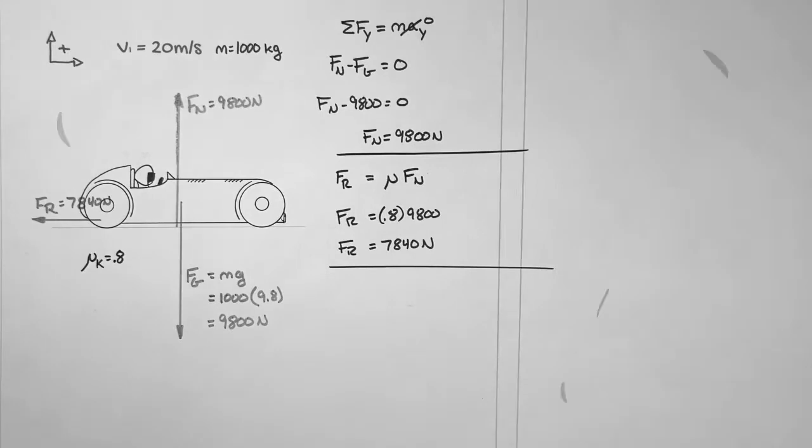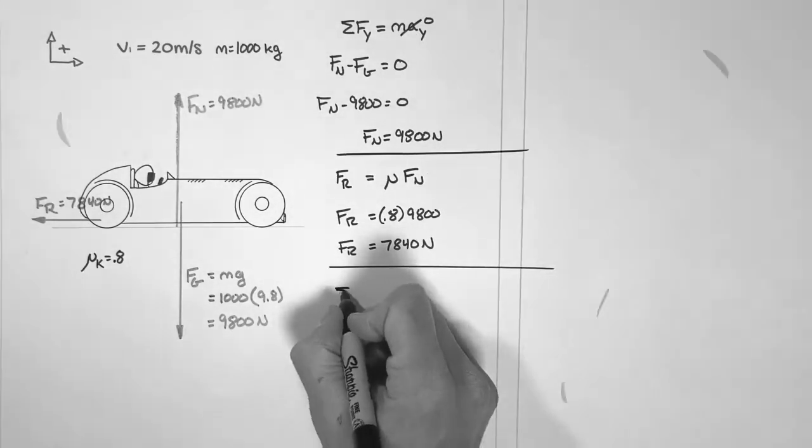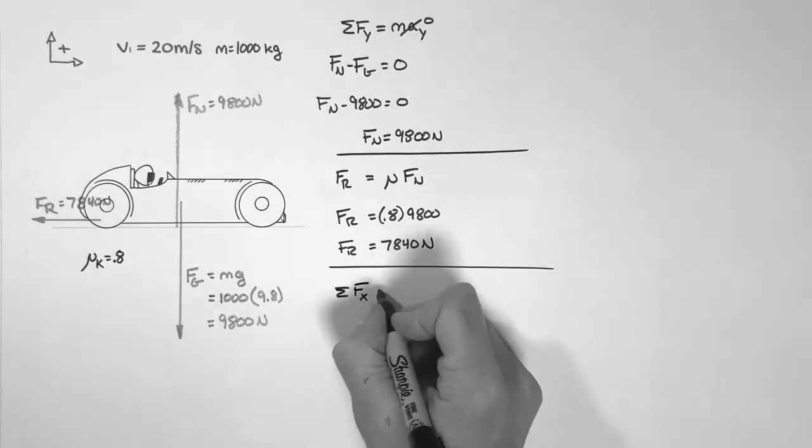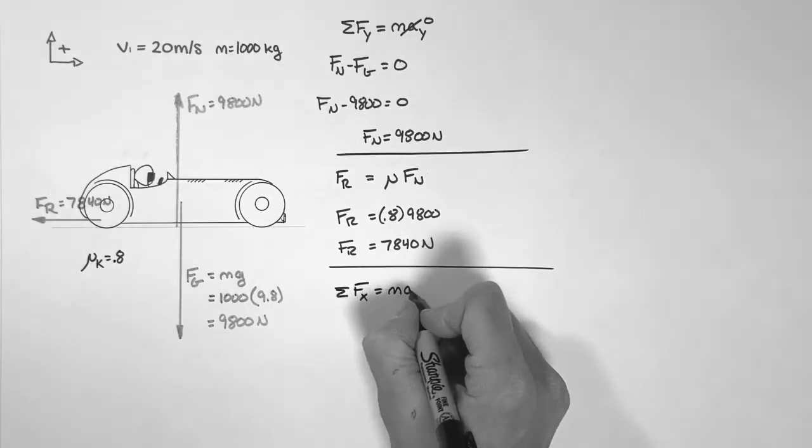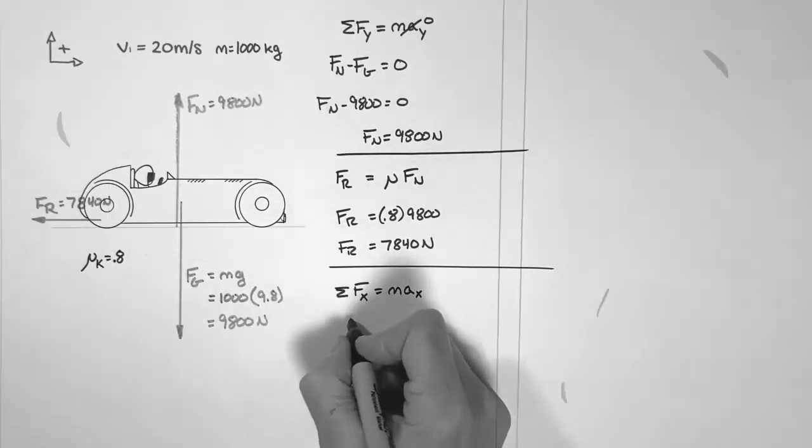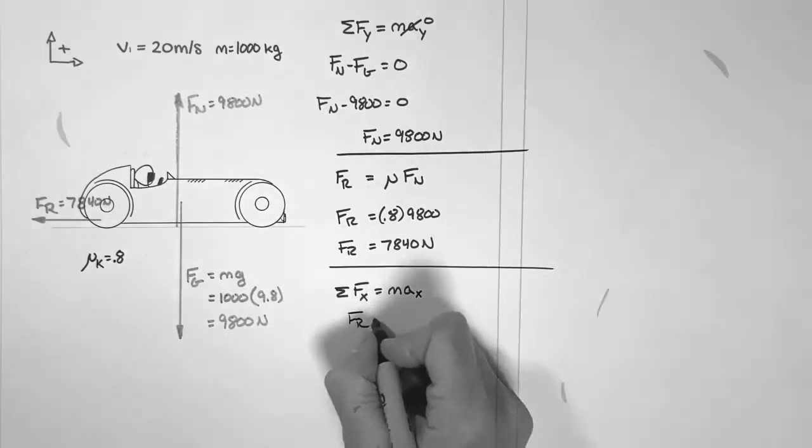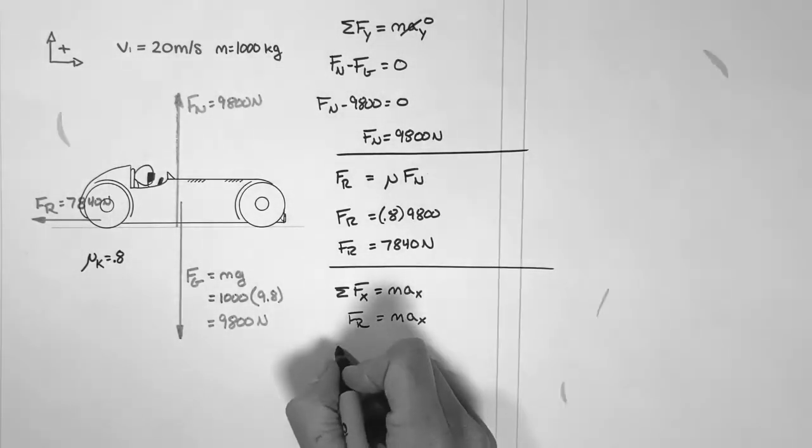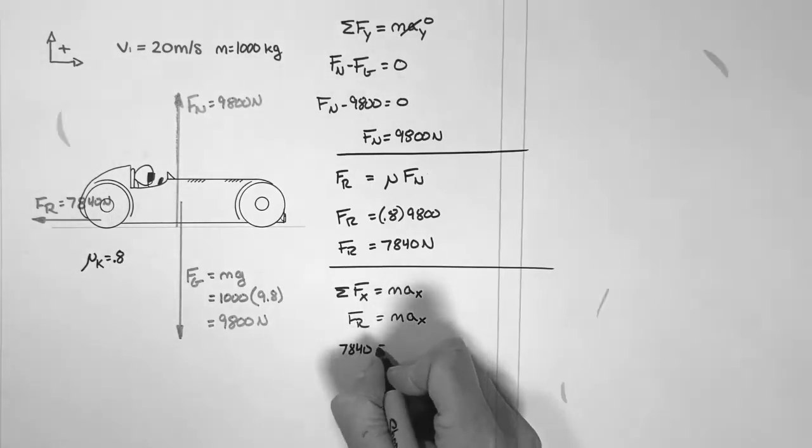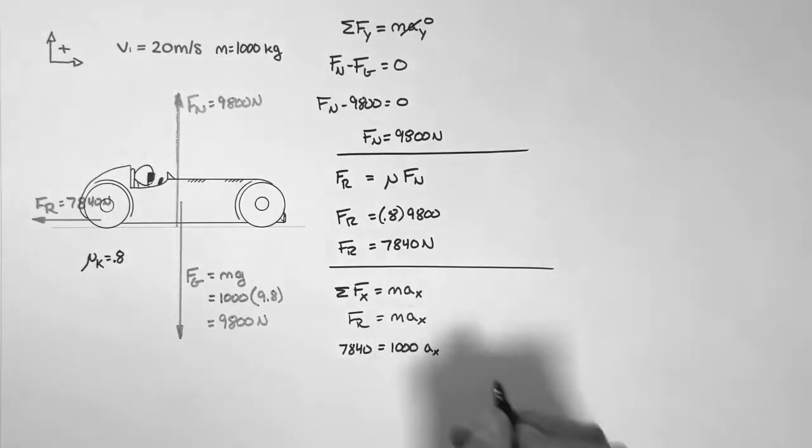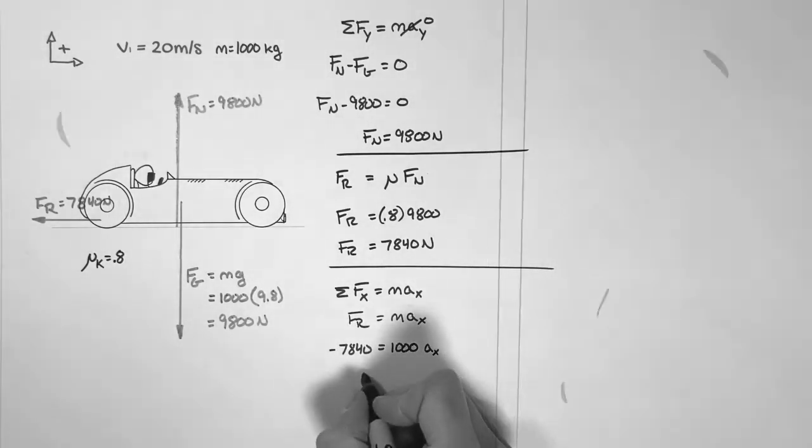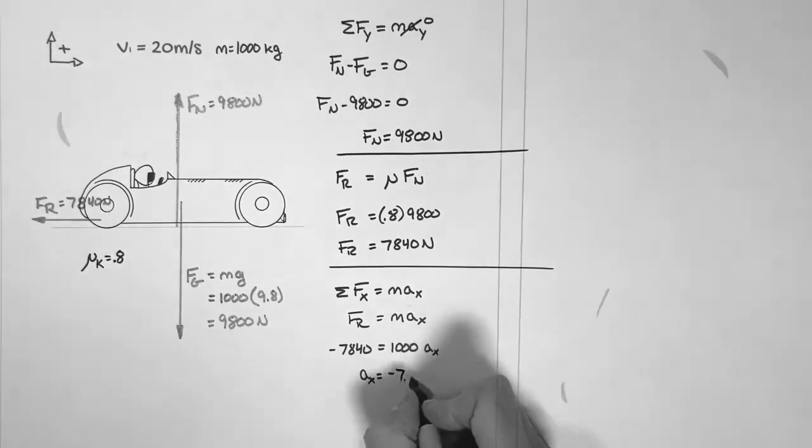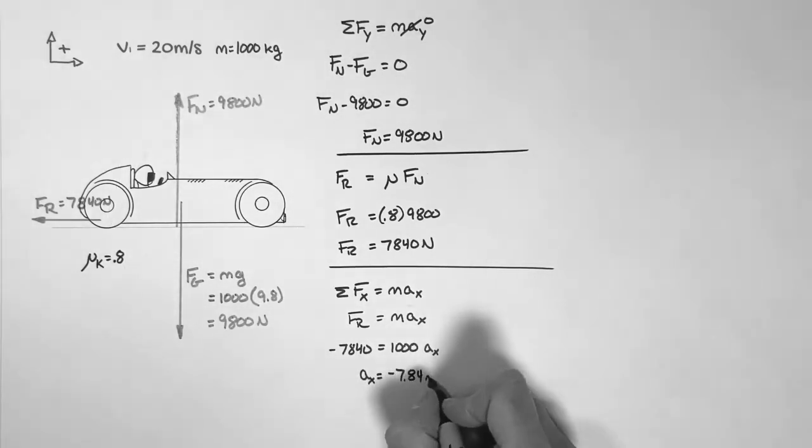Next, we apply Newton's second law in the x-axis. Because friction is the only force acting horizontally on the vehicle, friction will equal the mass times acceleration in the x-axis. Realize, friction is backwards. So when we plug this into Newton's second law, we need to make sure we show friction as being a negative value. In solving for the horizontal acceleration, we find that the car is accelerating at 7.84 meters per second squared backwards.